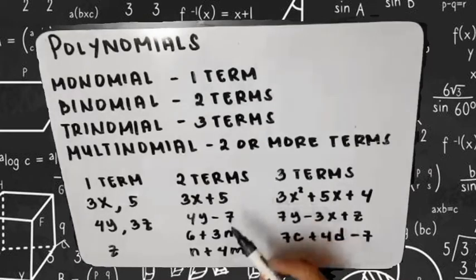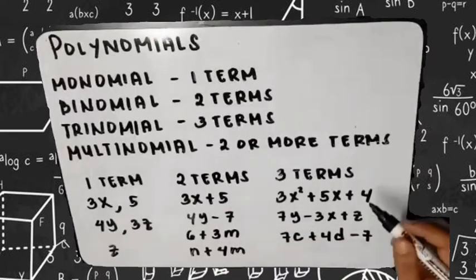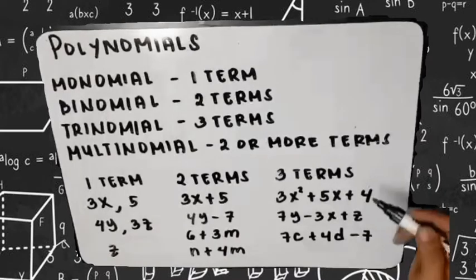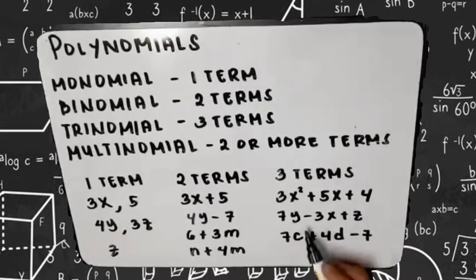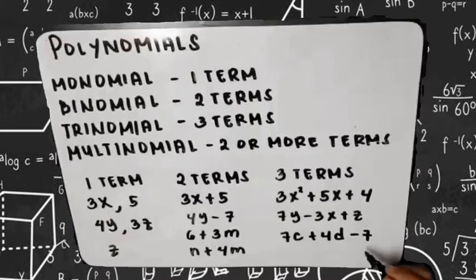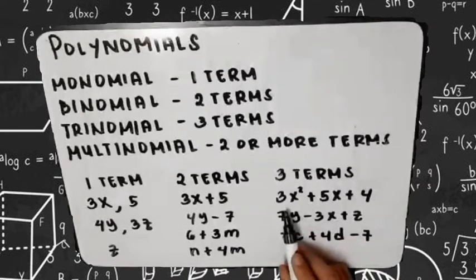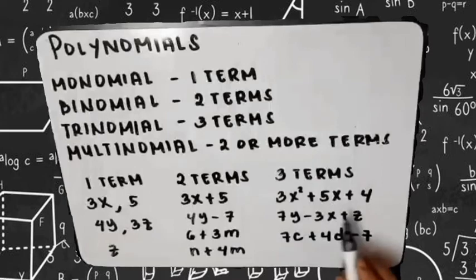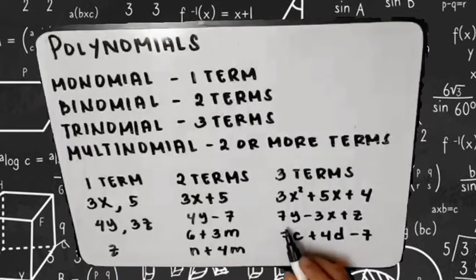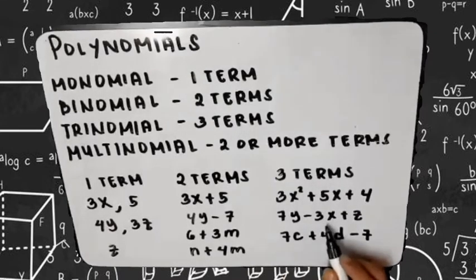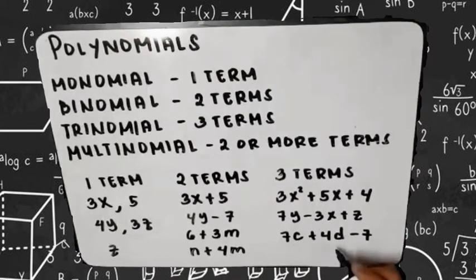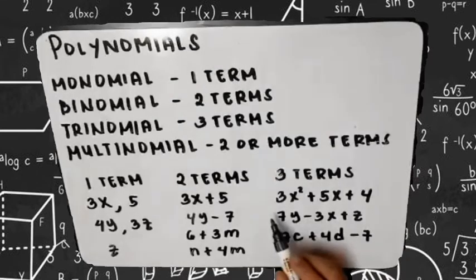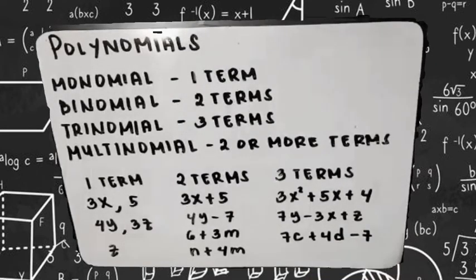Examples of trinomials — these have 3 terms each. We have: 3x squared plus 5x plus 4; 7y minus 3x plus z; and 7c plus 4d minus 7. The terms in the first example are 3x squared, 5x, and 4. In the second: 7y, negative 3x, and z. In the third: 7c, 4d, and negative 7. Each expression has 3 terms.